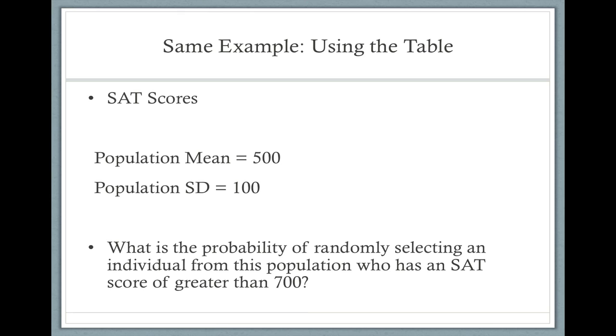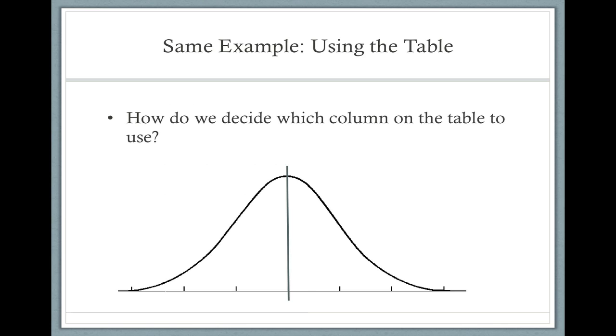Now let's use the same exact example, but we're going to use the table to figure out our proportions. We have SAT scores with a mean of 500 and standard deviation of 100. I still want to ask, what is the probability of randomly selecting an individual from this population who has an SAT score greater than 700? Let's take a look at our unit normal table. You can see that it has different columns: B, proportion in body; C, proportion in tail; or D, proportion between mean and Z. You can see those graphical representations of those different columns above it with the normal distribution graphs and shading.